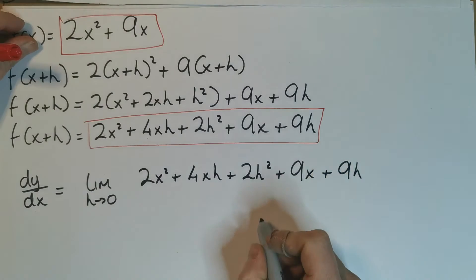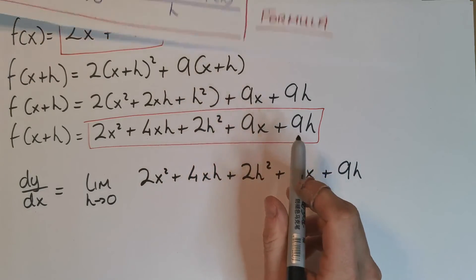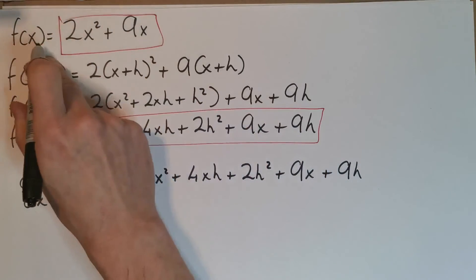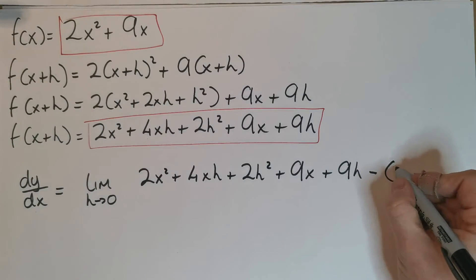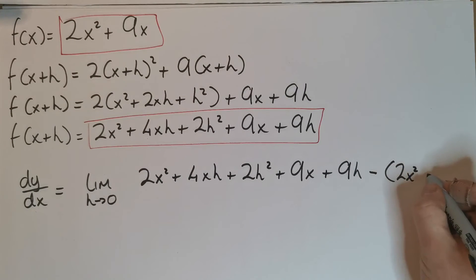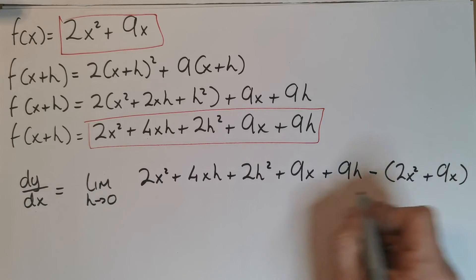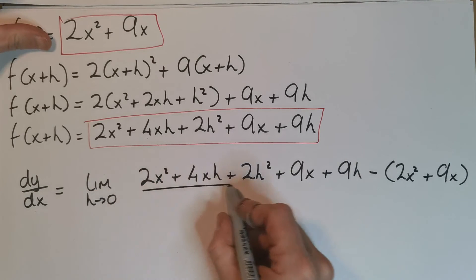Now it says minus f(x), so that's minus this stuff here. So minus, and let's use brackets, 2x² + 9x. So it's pretty long across the top, and that's all over h.